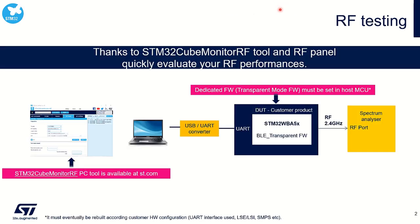Let's talk about RF testing. The idea is to use two things available on ST.com: the STM32 CubeMonitor-RF PC tool, which allows you to directly control the RF of the STM32WBA and set it in the right mode — transmit or receive — with the right power and channel in a very easy way. To do so, you must flash the STM32WBA with the transparent mode firmware. When this is done, you can control your product, set the right mode, power, and frequency, and thanks to a dedicated spectrum analyzer or other RF tool, confirm and improve your RF matching and filtering.